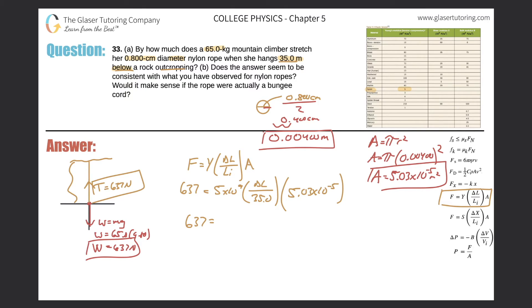So let's combine some terms here. 5 times 10 to the 9, times 5.03 times 10 to the negative 5, divided by 35. All right, that works out to be 7190 times the change in length.